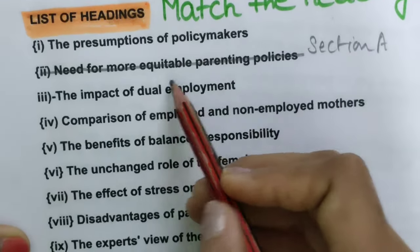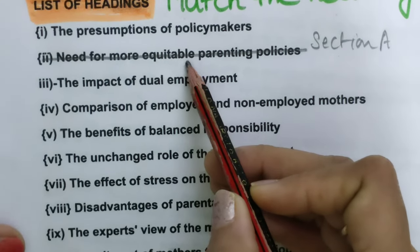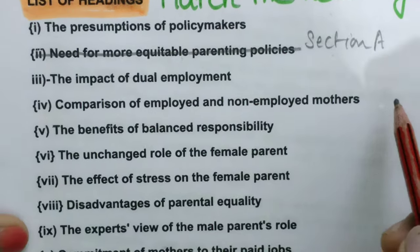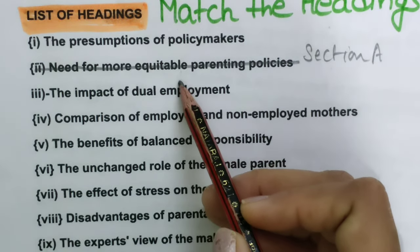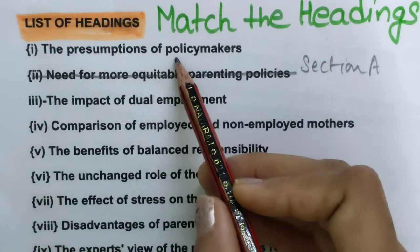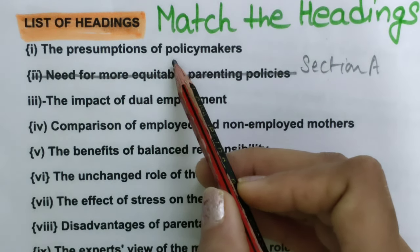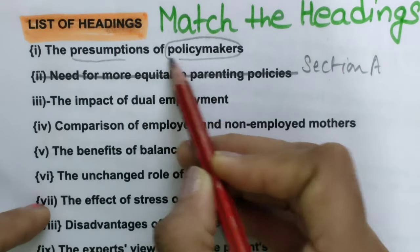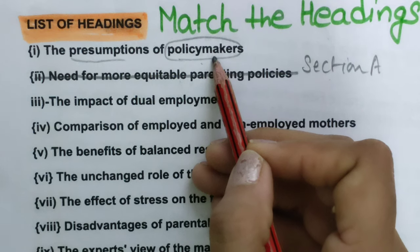For the list of headings, Section A has already been given as an example answer. Let us read all the options to understand how to do the Match the Heading task. First, we have to read all the headings and try to understand their meaning and keywords. The first heading is 'The Presumptions of Policy Makers' — meaning predictions or estimations by government planners or officials.